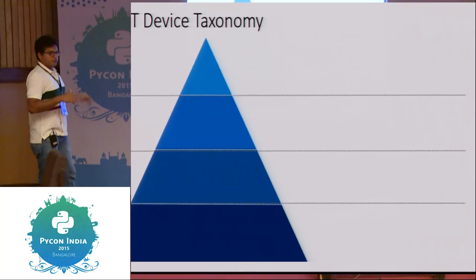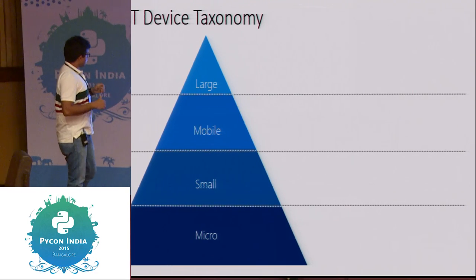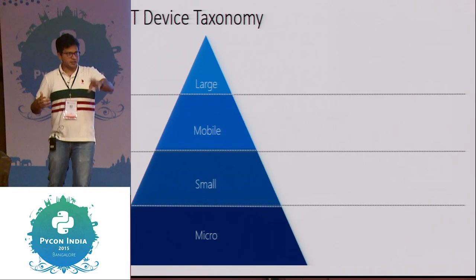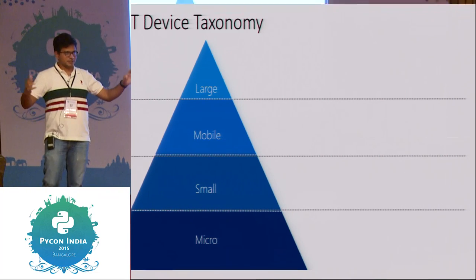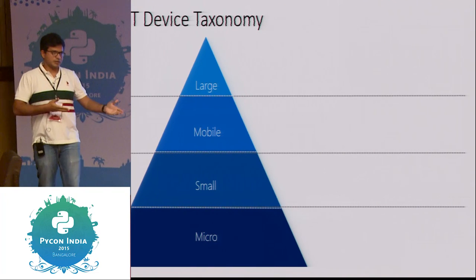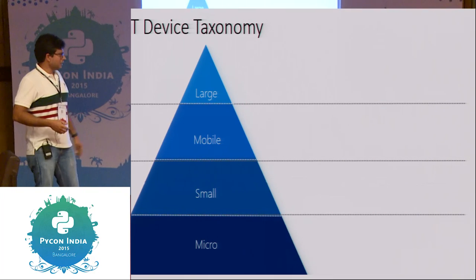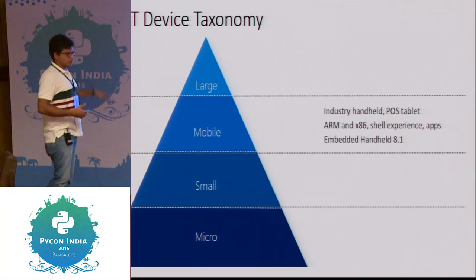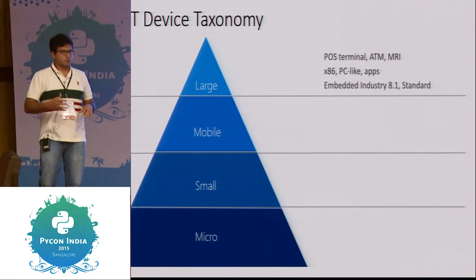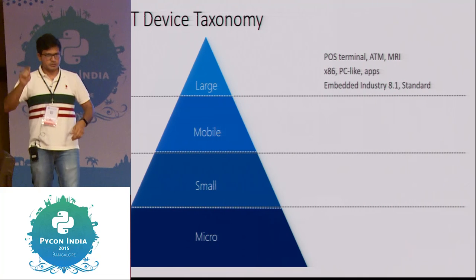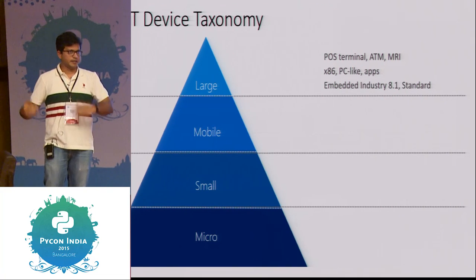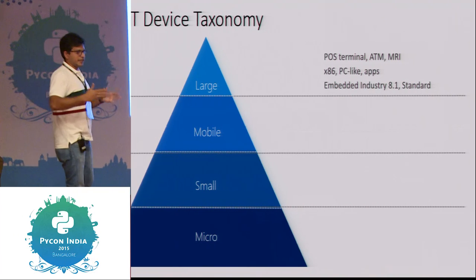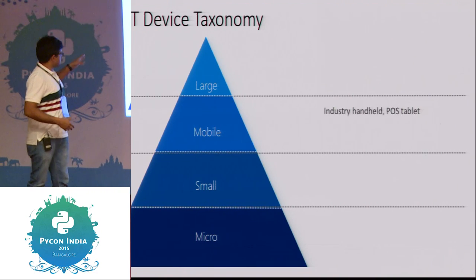Before we get started, we need to understand the device categories in IoT. There are basically four different types. Large devices include kiosks — for example, the self-check-in kiosks at airports or movie theaters. Then mobile devices, like the portable card-swiping terminals Flipkart delivery agents use, running an industry-grade operating system for secure credit card transactions.